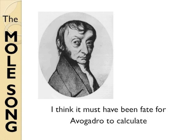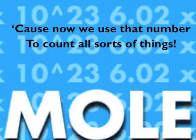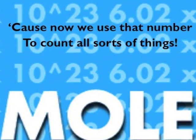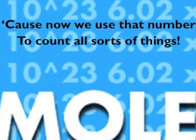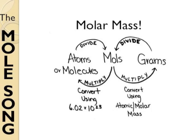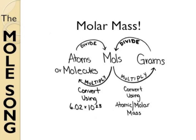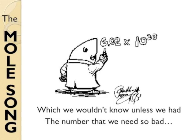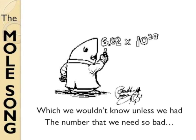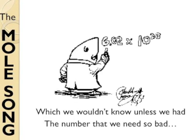I think it must have been fate for Avogadro to calculate the number of atoms in 12 grams of pure carbon-12. Cause now we use that number to count all sorts of things. 6.022 times 10 to the 23rd. The mole is used to find molar mass — the mass of any element's atoms divided by how many there are, which we wouldn't know unless we had the number that we need so bad. 6.022 times 10 to the 23rd.